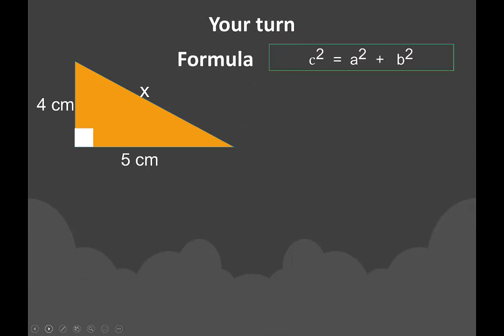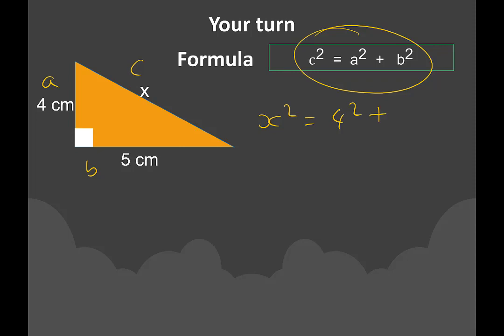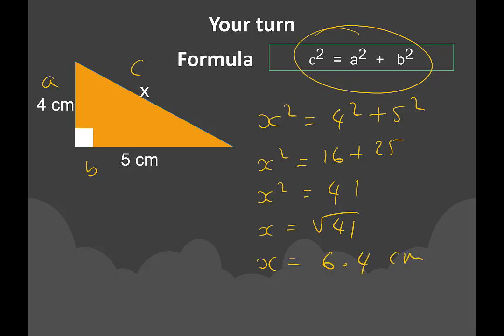Pause the video and have a go at this question. So, A is 4 centimeters, B is 5 centimeters, and C is X. According to Pythagoras' formula, X squared equals 4 squared plus 5 squared. Simplifying: 16 plus 25 gives X squared equals 41. Always double check your calculation. So, X equals the square root of 41, which gives us an answer of 6.4. X equals 6.4 centimeters to one decimal place.